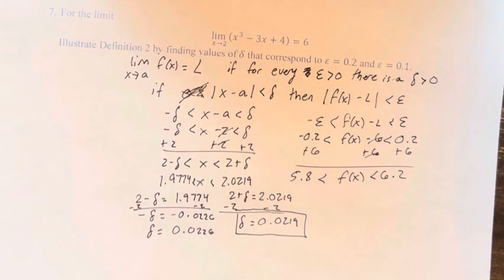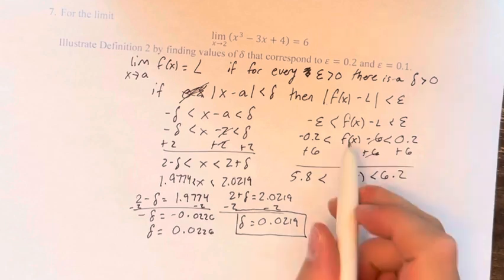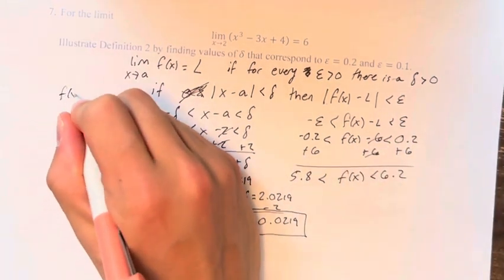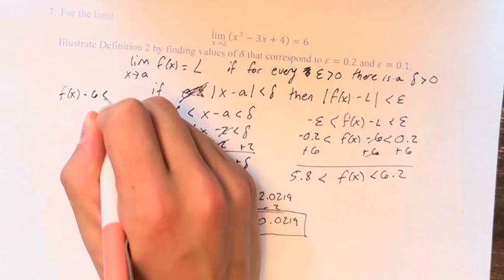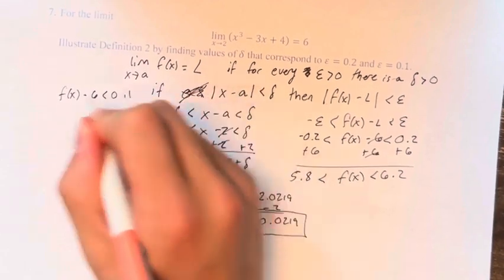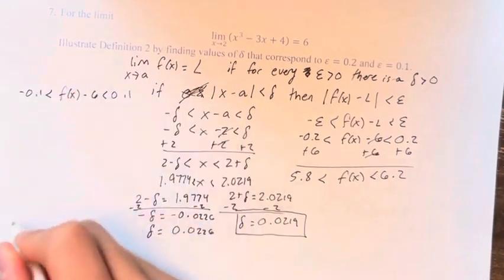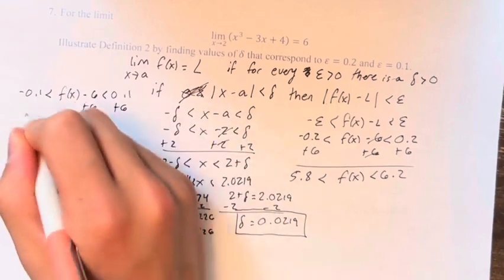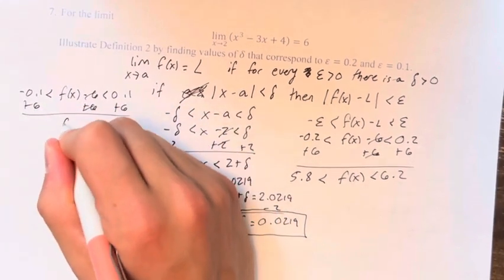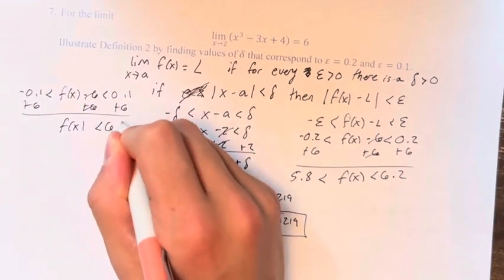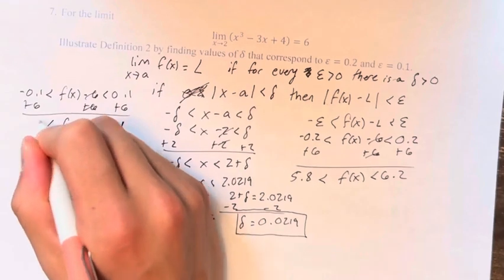And so now we repeat the process, except with an epsilon of 0.1. So up here, we have f of x minus L, which again is 6, has to be less than 0.1 and greater than negative 0.1. So then solving this, we have f of x is less than 6.1 and greater than 5.9.